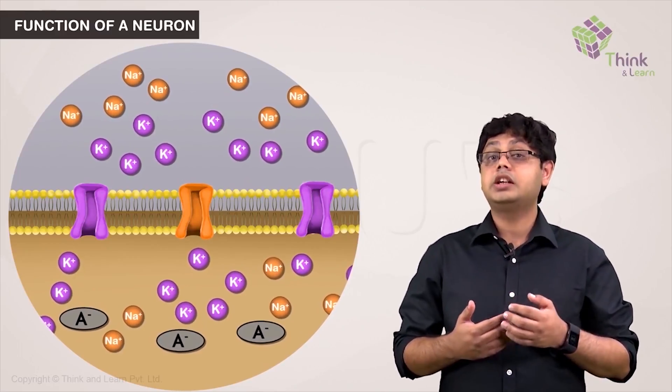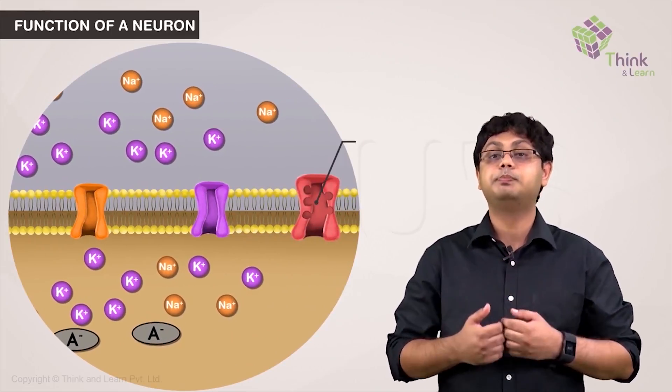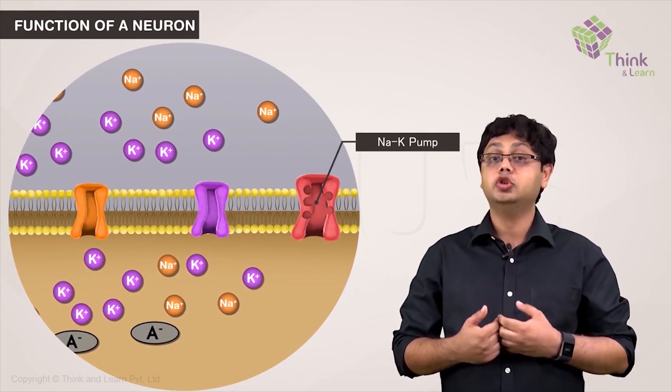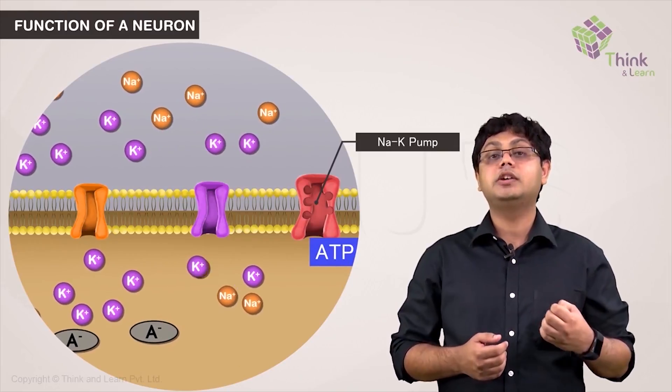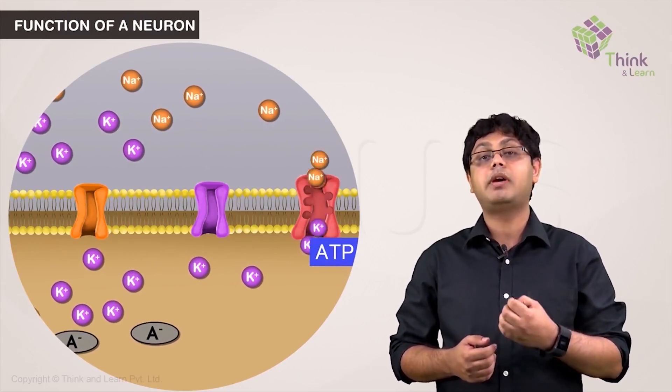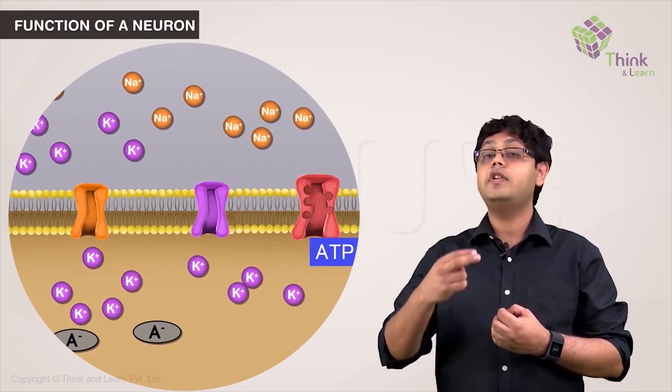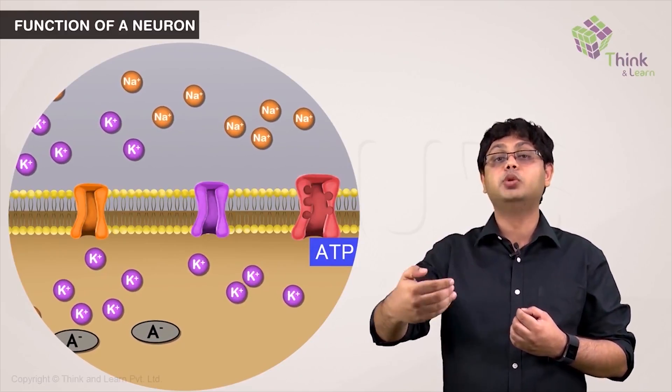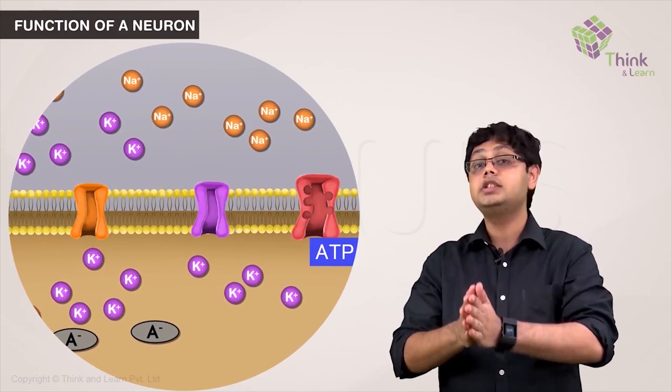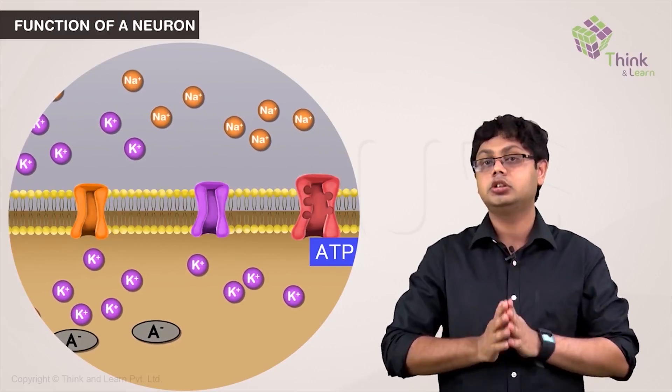Contributing to this electrical gradient is also the sodium-potassium pump. This pump uses ATP to actively transport three sodium ions outside the cell for every two potassium ions that it moves inside the cell against their concentration gradient.